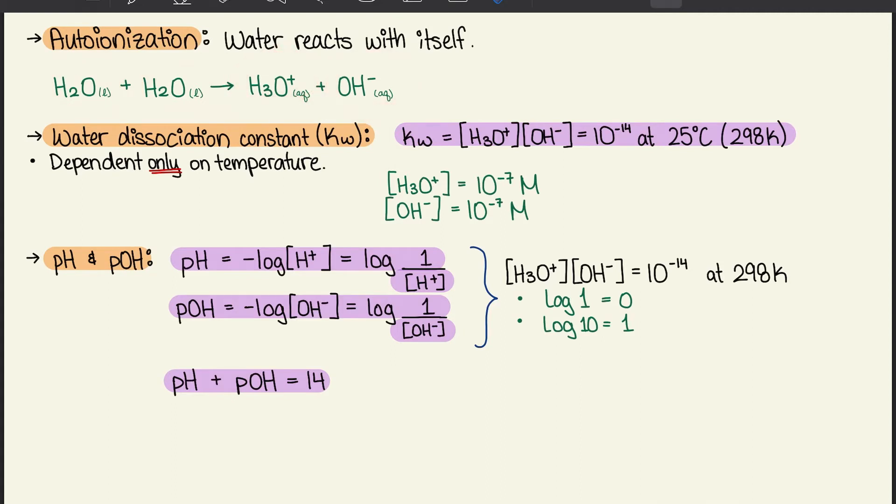The water dissociation constant we represent with Kw. The equation is Kw equals the concentration of hydronium ion times the concentration of hydroxide ion, which equals 10 to the power of negative 14 at 25 degrees Celsius (298 Kelvin). This is dependent only on temperature.